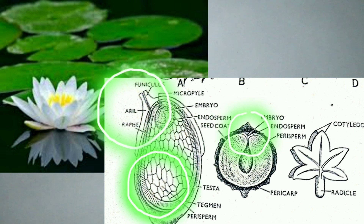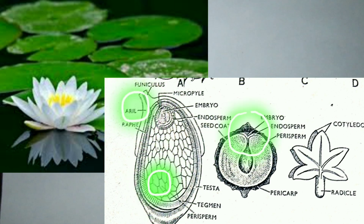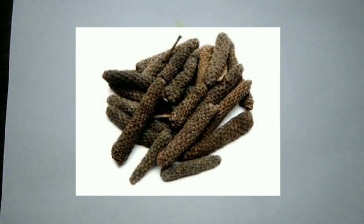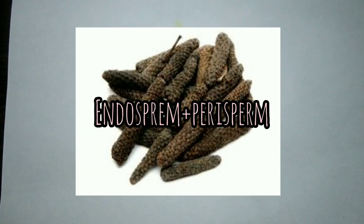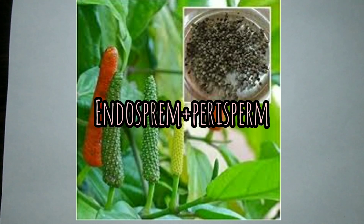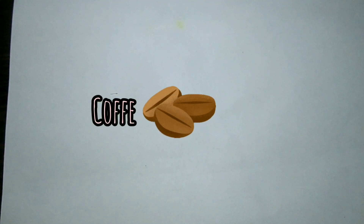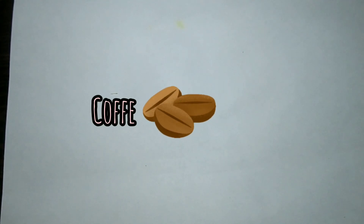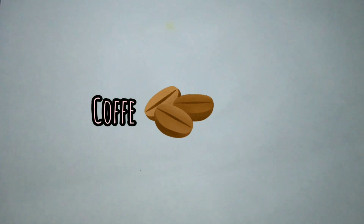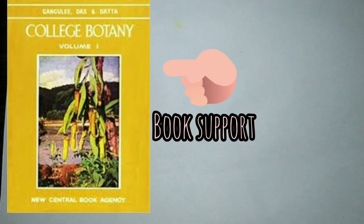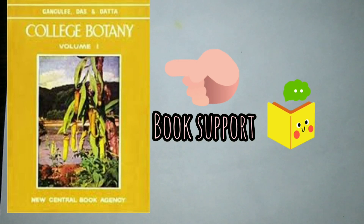The seed of water lily has a third covering called the aril, which is spongy and helps the seed to float. The family Piperaceae shows both endosperm and perisperm. The common black pepper of this family is a fruit with a single seed, endosperm, and a tiny embryo. In coffee, the small embryo with two cotyledons is embedded in a mass of horny endosperm formed mostly of hemicellulose.